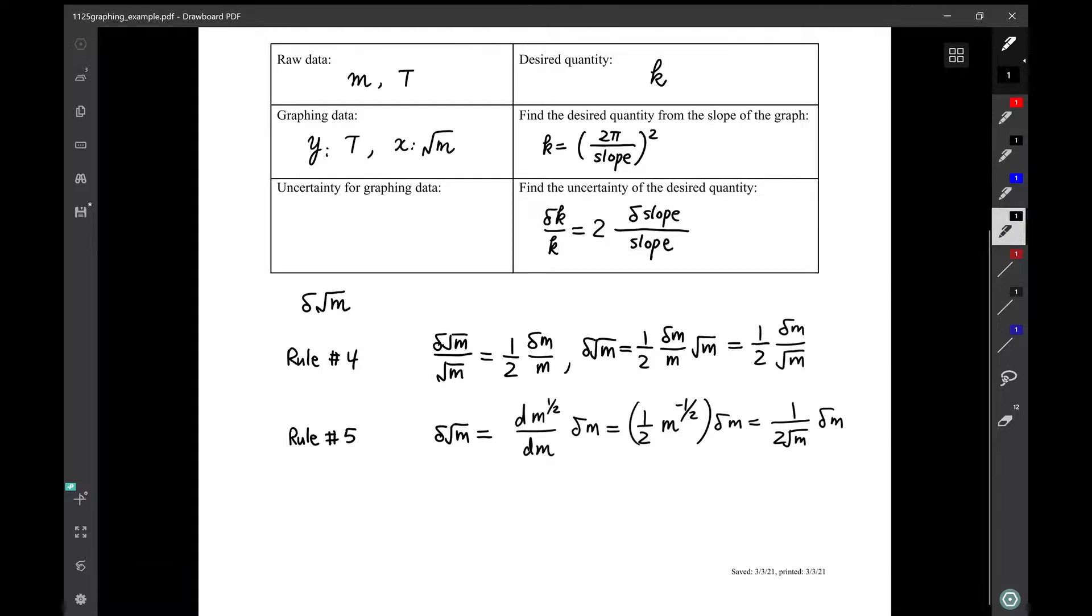And now we can write here uncertainty for the graph data. Because y is T, so δy is simply δT. They're equal, so they have the same quantity, so they have the same uncertainty. But x is δx, which is δ√m, that equals to a half δm over √m.